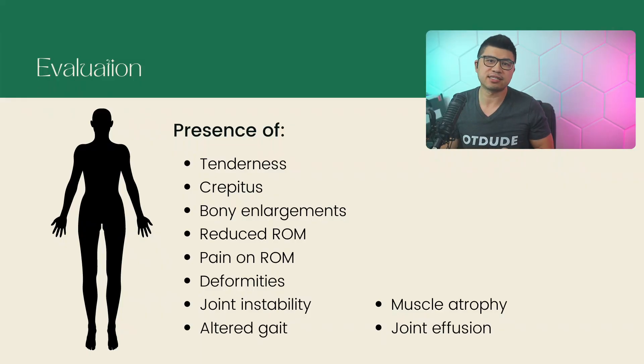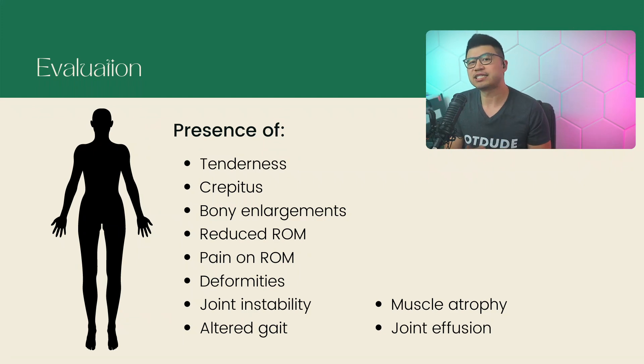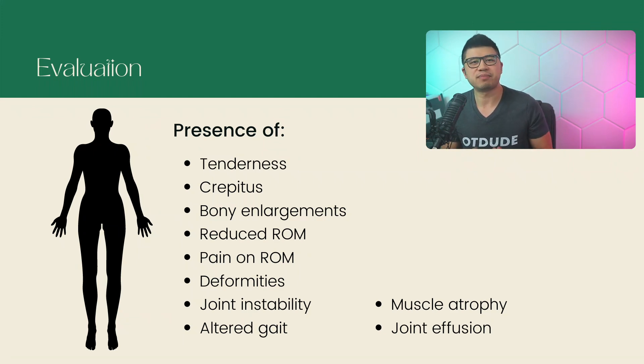Based on these symptoms, they are also things to look for during OT evaluation. During your evaluation, you should look, palpate, and listen for tenderness, crepitus, bony enlargements, reduced range of motion, pain on ranging, deformities at the joints such as Bouchard's and Heberden's, joint instability, altered gait, muscle atrophy, and joint effusion, which means a swollen joint. An example of a standardized outcome measure you can use is the Jebsen-Taylor Hand Function Test.